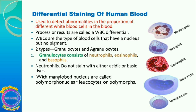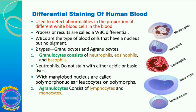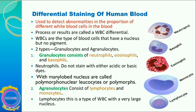Granulocytes consist of neutrophils, eosinophils, and basophils. Neutrophils do not stain with any acidic or basic form of the dye, and they have a many-lobed nucleus — these are polymorphonuclear leukocytes or polymorphs. Agranulocytes consist of lymphocytes and monocytes. Lymphocytes are a type of WBC with a very large nucleus.